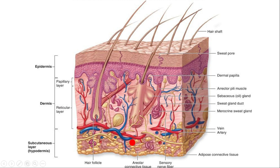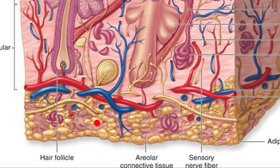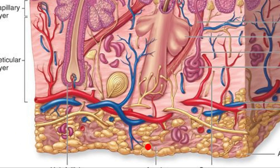This is the hypodermis, also called subcutaneous tissue or superficial fascia. It is composed mostly of fat — adipocytes — and loose connective tissue, specifically loose areolar tissue. This loose connective tissue loosely attaches the skin to the underlying muscles and organs.